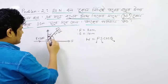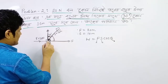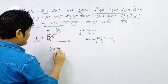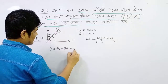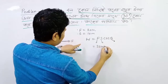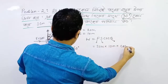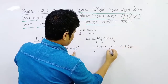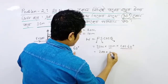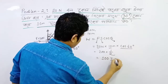So the theta is cos 60. So b is 2, and cos 60 degrees is half. So the result is 100 joules.